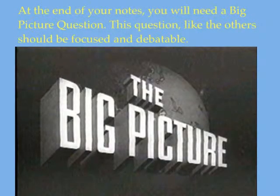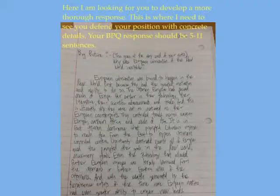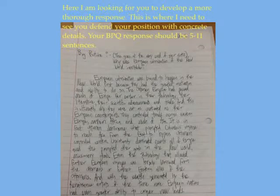After you've done that with each section in turn — developing the section question, the section thesis, then taking notes on that section, then reading the next section and going through the same thing — at the end of your notes you will need a big picture question. This question, like the others, should be focused and debatable. Here, though, I'm not looking for a thesis statement. This is where I need to see you defend your position with concrete details and more specific evidence. Your big picture response should be about five to eleven sentences.